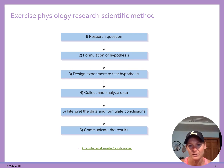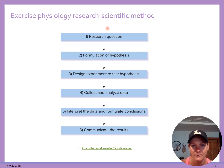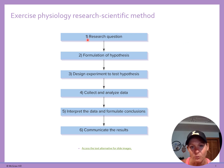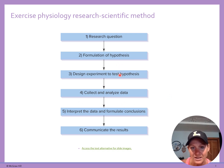So what does the scientific method look like? It takes you through various steps: number one, we have a research question; number two, we form a hypothesis; number three, we design an experiment to test that hypothesis; we collect and analyze data; then we interpret the data and formulate conclusions; and then we communicate the results.